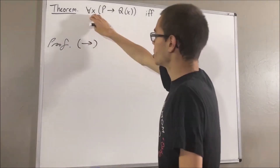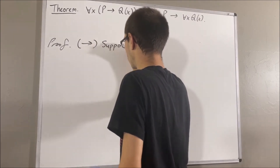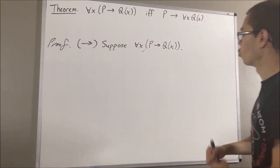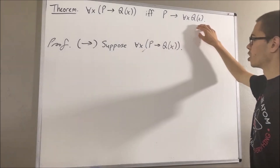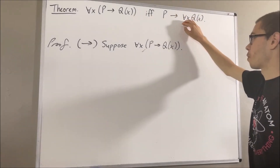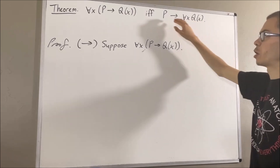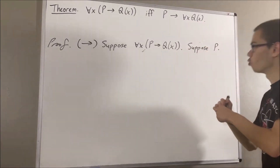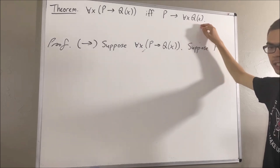To do so, suppose the left side is true — that is, for all x, P implies Q of x. From here, we want to show that P implies for all x, Q of x. So we're trying to show if P is true, then for all x, Q of x. So let's suppose that P is true. And now we want to show for all x, Q of x.